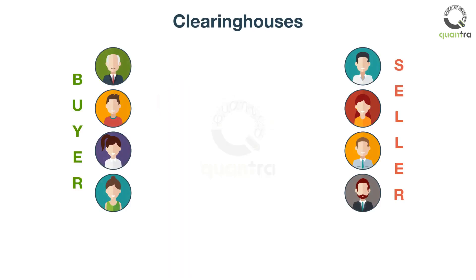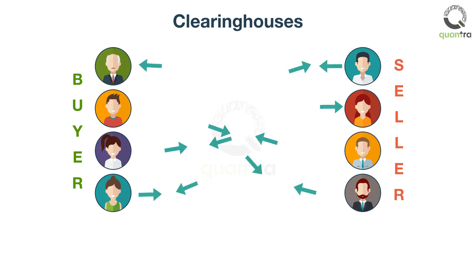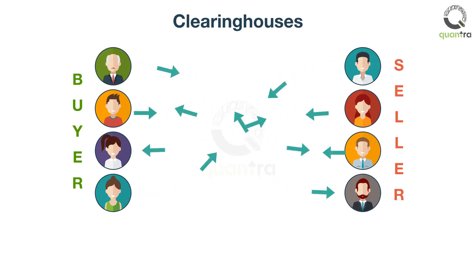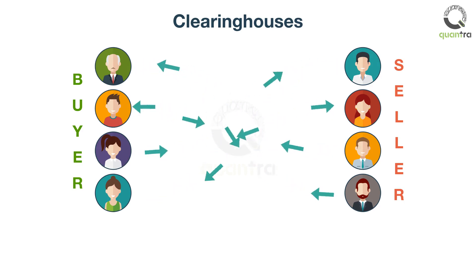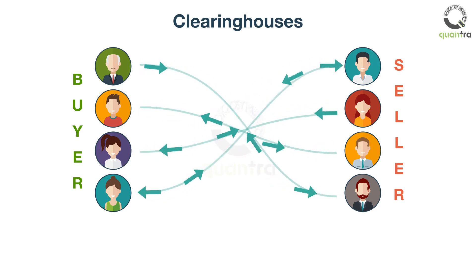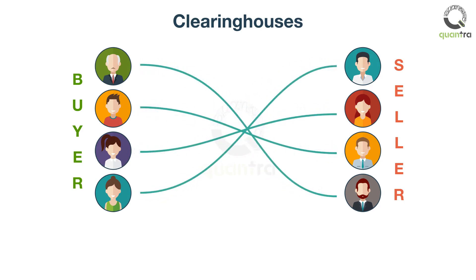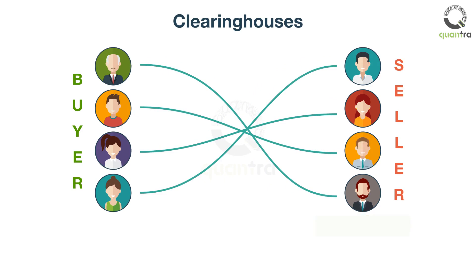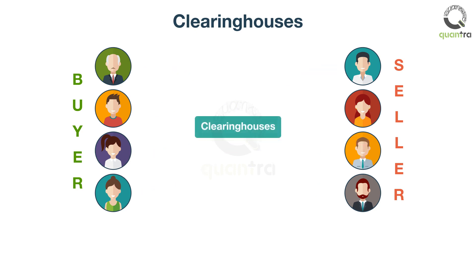On a typical trading day, a given exchange carries out tens of thousands of transactions during trading hours. These transactions need to be settled, and the exchange needs to ensure that no investor faces a counterparty risk. Exchanges ensure this by clearing trades, and the entities who clear those trades are the clearing houses.